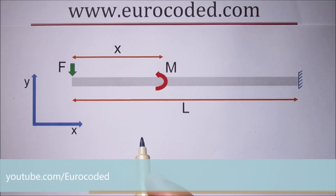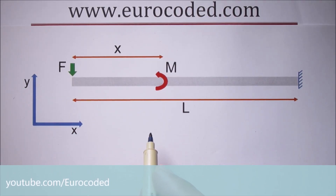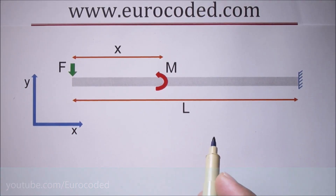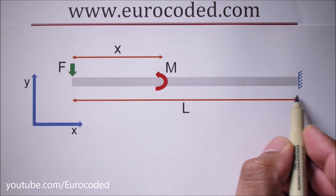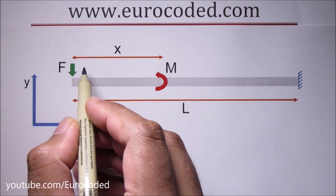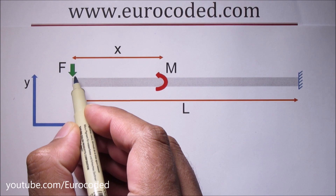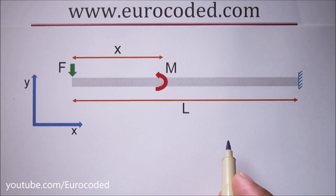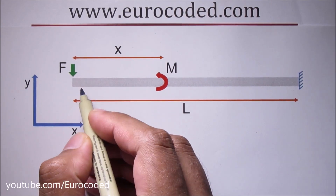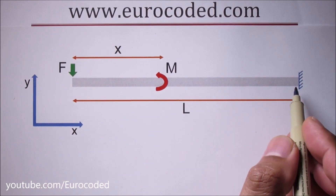Let's dive in and look at a slope and deflection calculation example. In this video we are going to look at a cantilever beam with a point load at the end. First we will derive the slope and deflection equations and then we will calculate the slope and deflection at the free end of this cantilever beam.